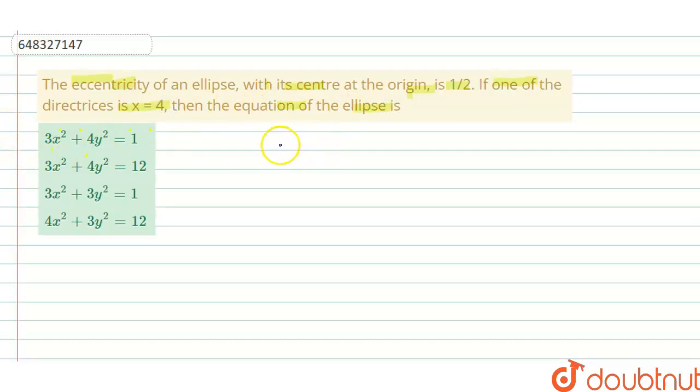x square upon a square plus y square upon b square equals one. As it is given x equals four, we can clearly see that our major axis will be x axis, and therefore a must be greater than b and major axis is x axis.